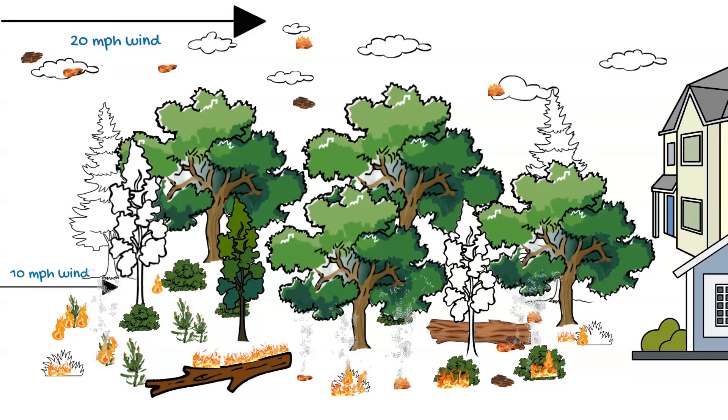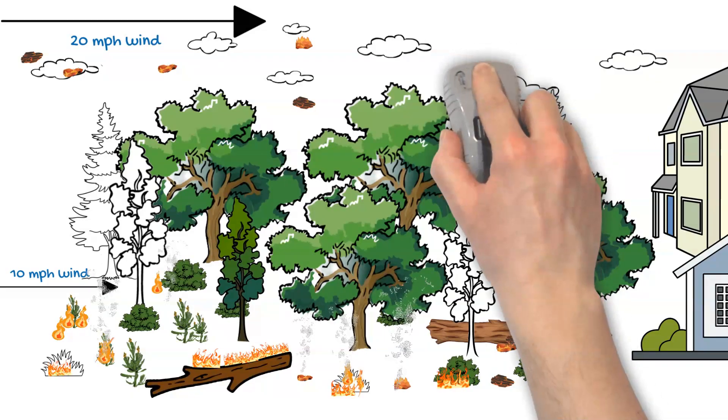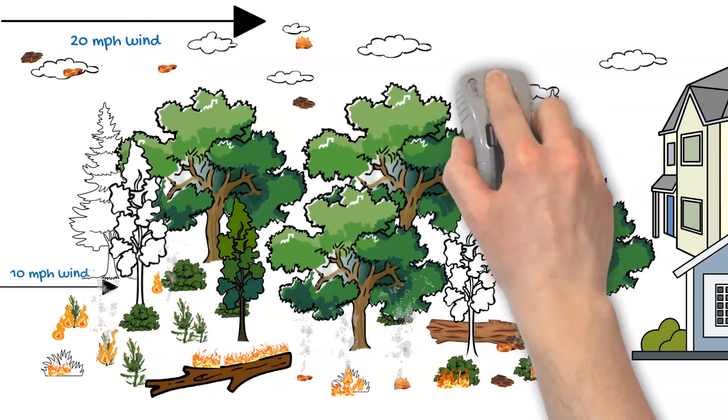Without the heavy fuel loading, fires do not have the energy to create a strong convective column that brings heat into the canopy. It brings fire into the canopy. And that's what lifts those embers up into the air. Without the heavy dead and down, we just don't get the embers that get lifted into the 20-foot winds.